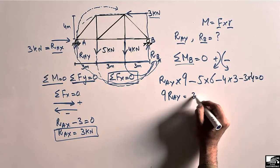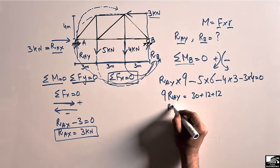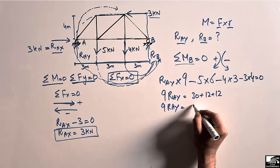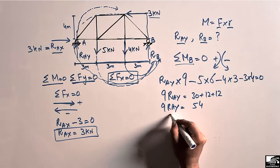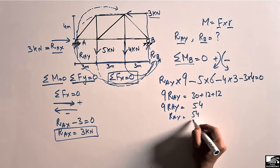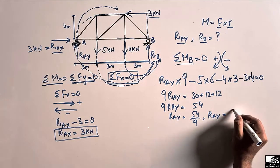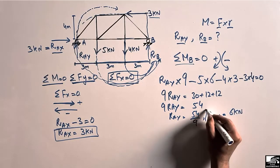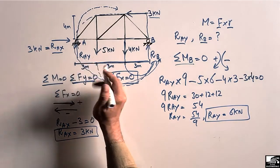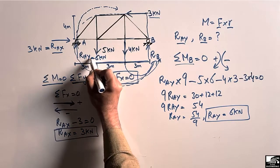Solving: 9·R_AY equals 30 plus 12 plus 12, giving 9·R_AY equals 54. Dividing by 9, R_AY equals 6 kN. So the vertical reaction at support A has a magnitude of 6 kN.